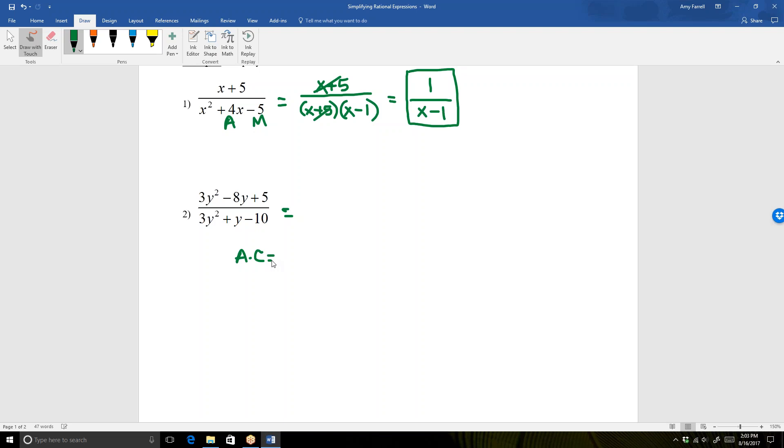And so starting with the numerator, a times c is 15. I'm going to look for two numbers that multiply to 15 and add to negative 8. Those two numbers are negative 5 and negative 3. So I'm going to rewrite the trinomial in the numerator like this. So I'm replacing the negative 8y with negative 3y minus 5y, which is an equivalent substitution.